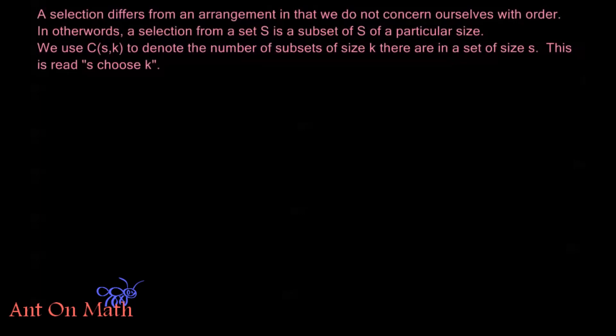Now a selection differs from an arrangement in that we do not concern ourselves with order when we talk about selections. In other words, a selection from a set S is a subset of S of a particular size. We use C(S,K) to denote the number of subsets of size K that are in a set of size S, and this is read S choose K.